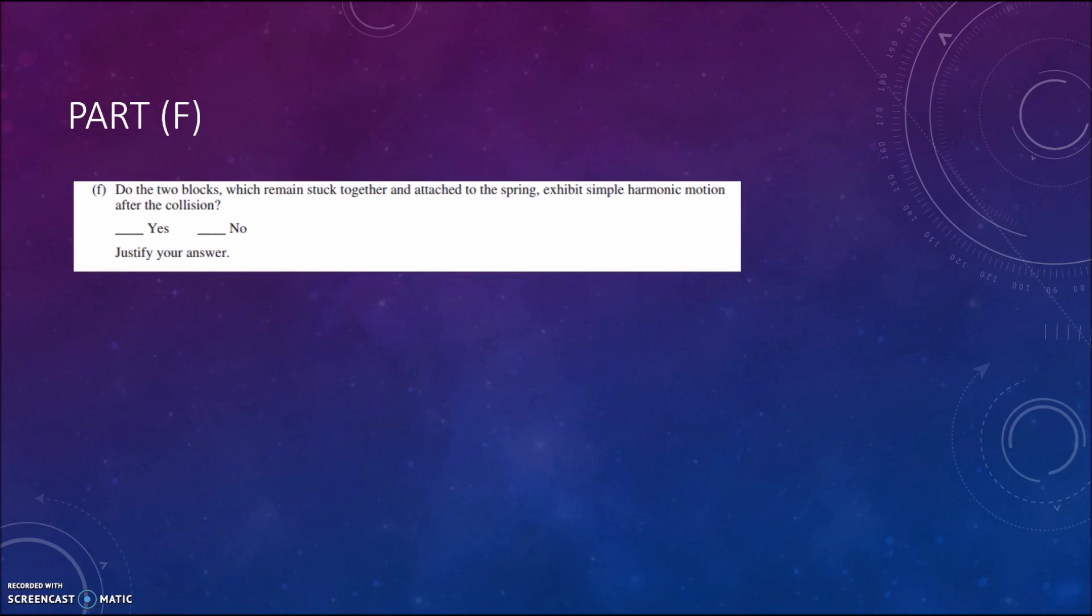Moving on to the final part we have do the two blocks which remain stuck together and attached to the spring exhibit simple harmonic motion after the collision. Now we know that for there to be simple harmonic motion there has to be a linear restoring force. However in this question we've been given the equation f(x) or the force is equal to negative b times x³. So this is a non-linear restoring force so the blocks will not exhibit simple harmonic motion.